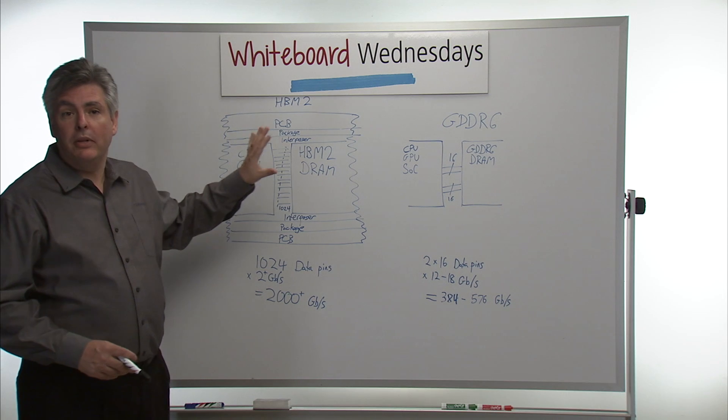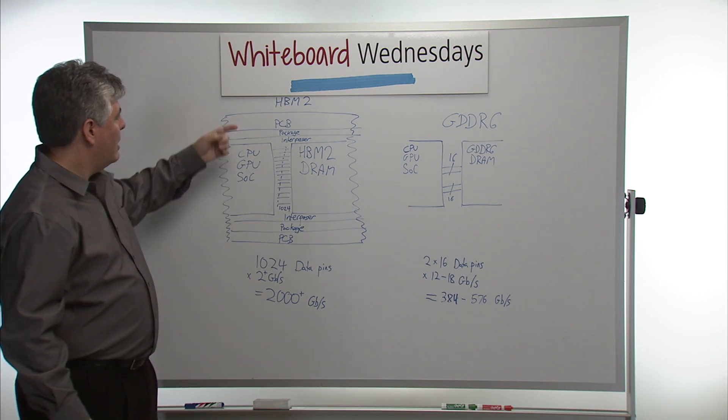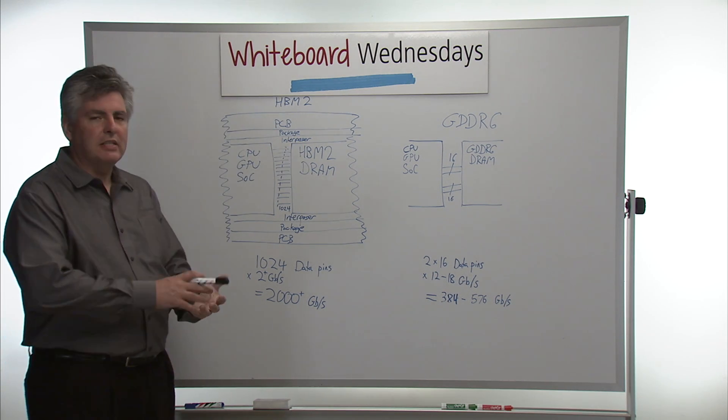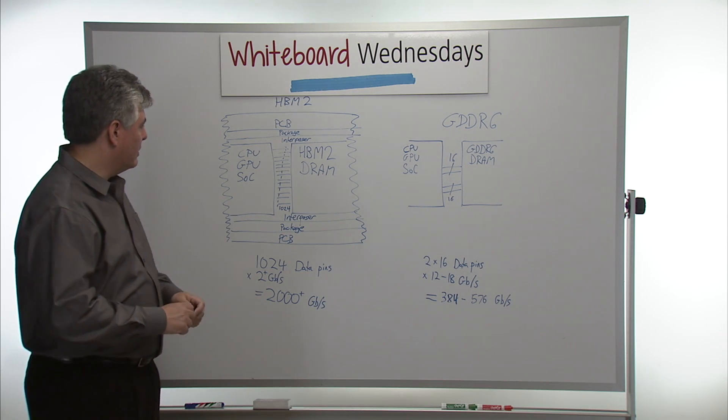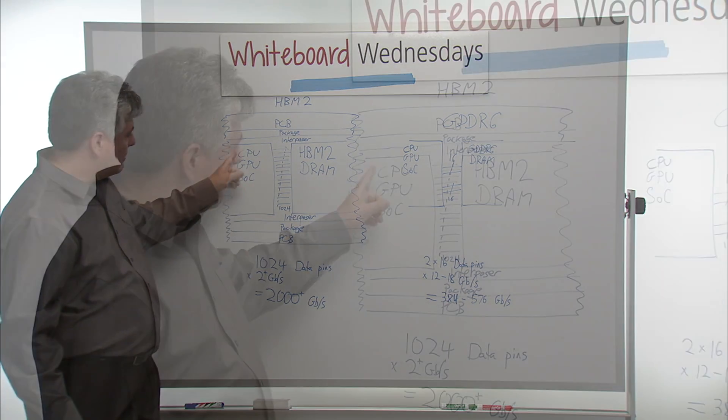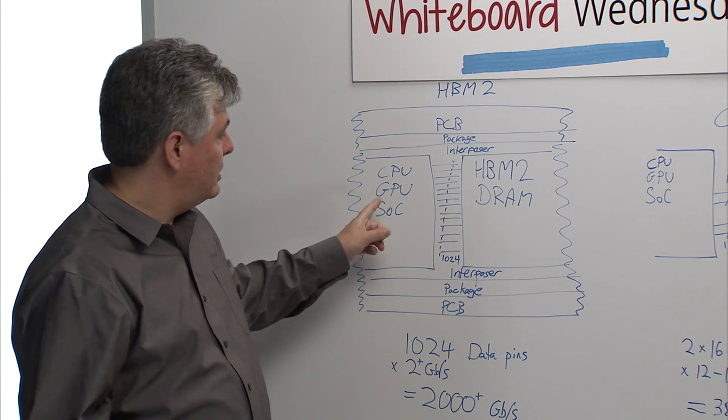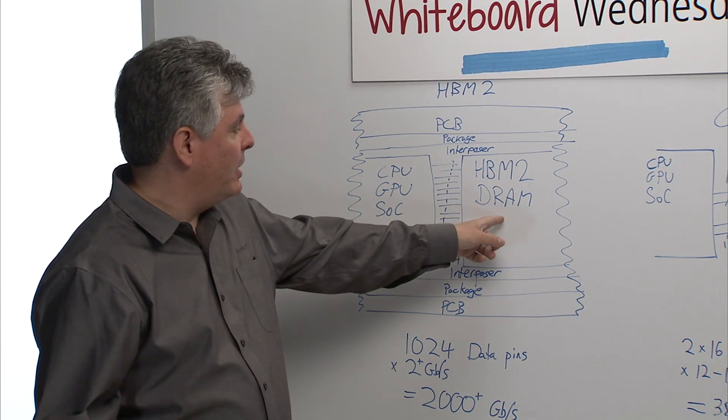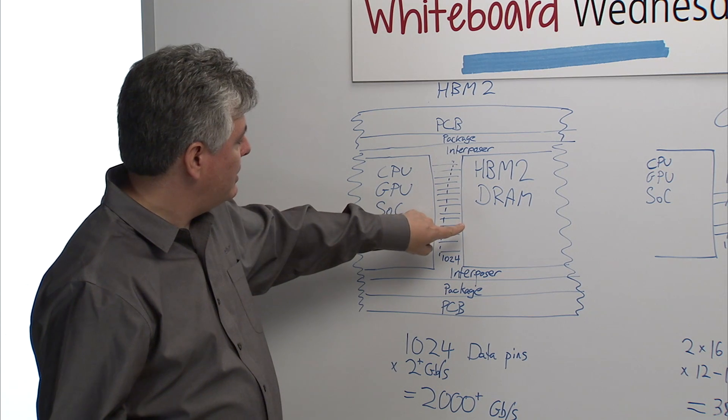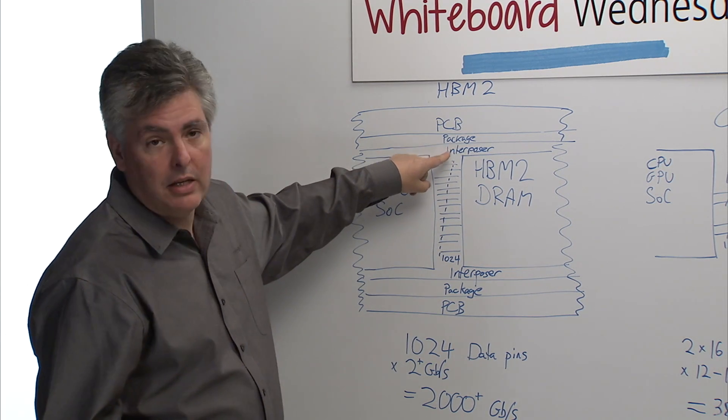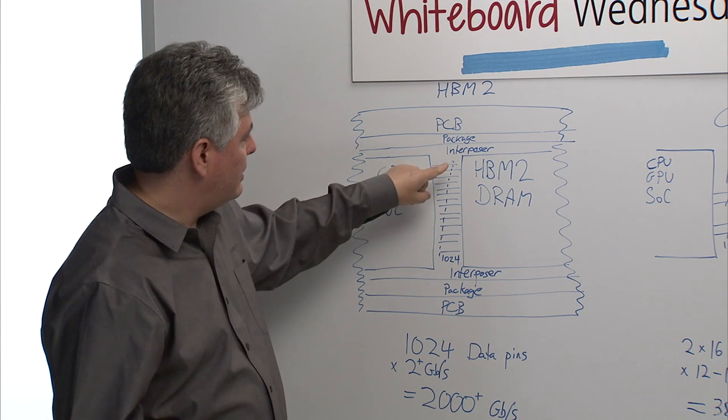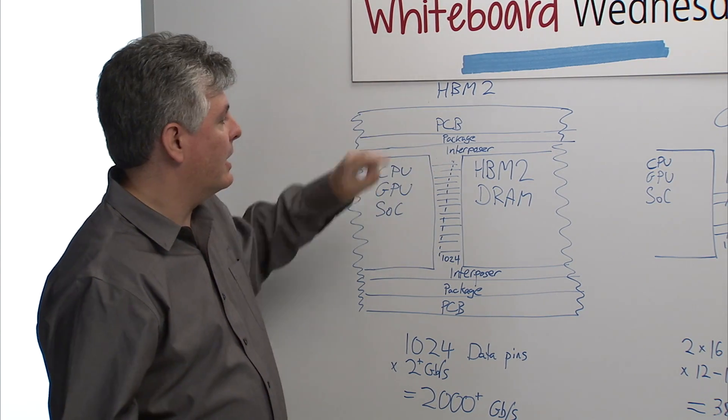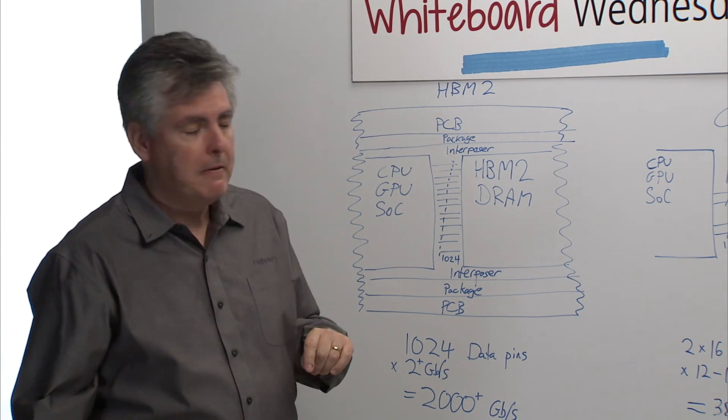Looking at these technologies in plainer view, looking at them down from the top, an HBM2 device is really a stack up of pieces of silicon on top of other pieces of silicon. I've got two dies here. I've got my CPU or GPU or my SoC connected to my HBM2 DRAM. These two devices sit on top of a silicon interposer, which actually does the connection between the two dies. That silicon interposer sits in a package. That package sits on a PCB.